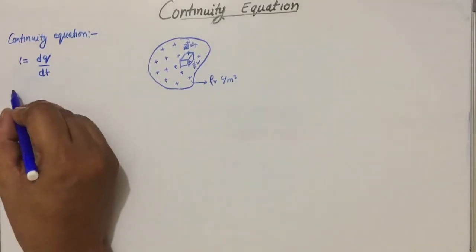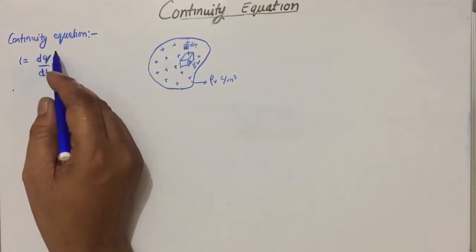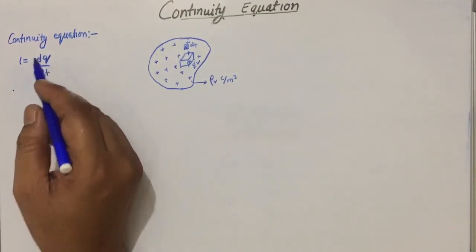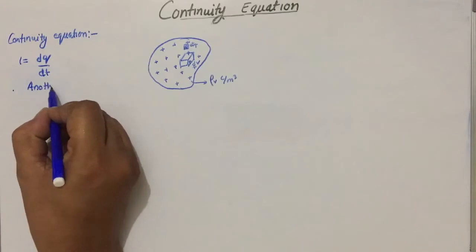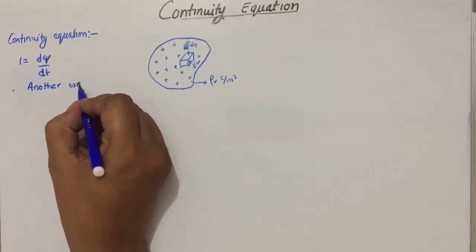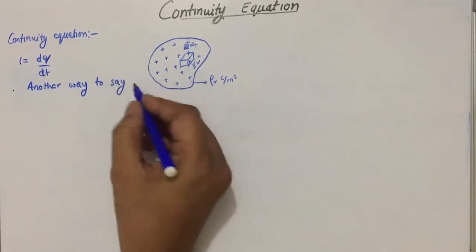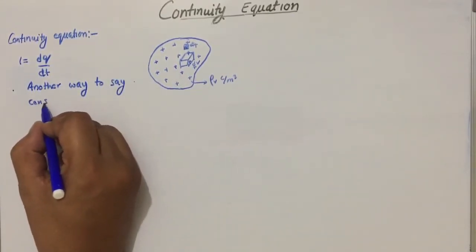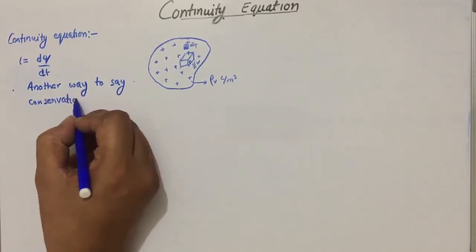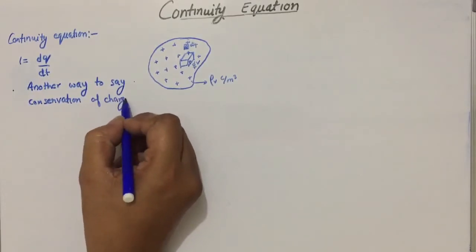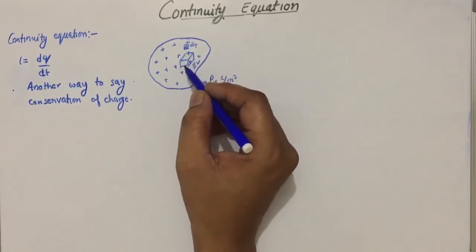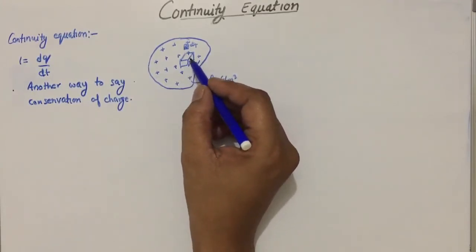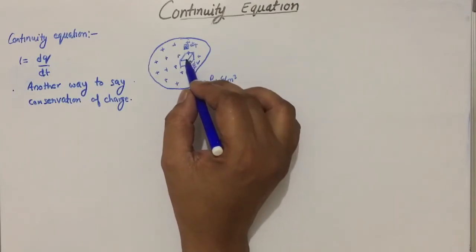Otherwise the charge will remain conserved. In another way, we can say that the continuity equation tells us about the conservation of charge. It is another way to express conservation of charge. Now consider this point: if current is flowing outward from this differential volume, then the current is flowing outward.